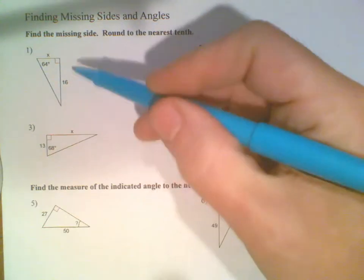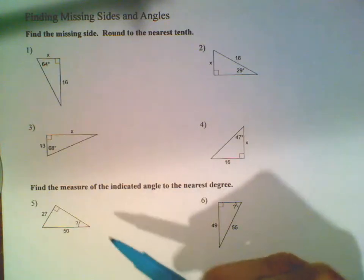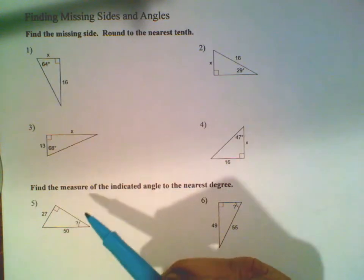We'll be finding missing sides, finding the value of X (the length of the missing side in the right triangle), and finding the missing angle.